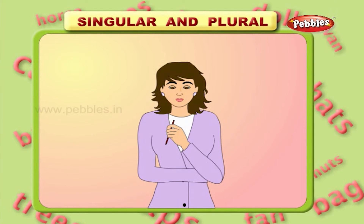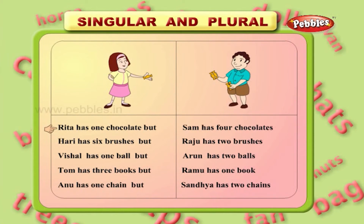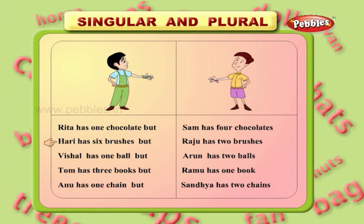Let us form some sentences for singular and plural. Rita has one chocolate, but Sam has four chocolates. Hari has six brushes, but Raju has two brushes.